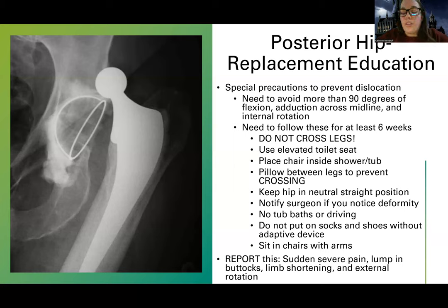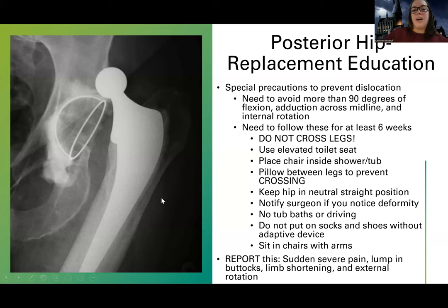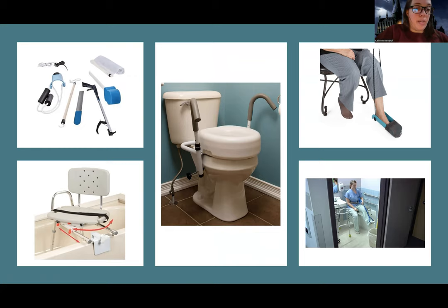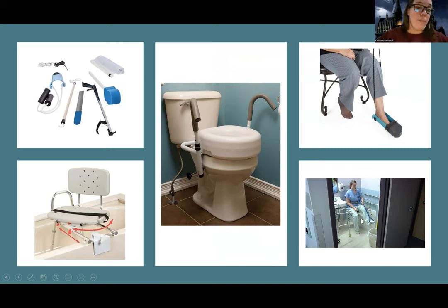Patients should call their surgeon if they notice a deformity — it can literally feel like a lump in the buttocks — or if they have sudden severe pain, if their limb gets shorter, or if there's external rotation again. Those are all warning signs of re-dislocation. There are also adaptive devices available — grabbers, scrubbers, devices to help put socks and shoes on, elevated toilet seats, and shower chairs or devices to help get in and out of the bathtub.